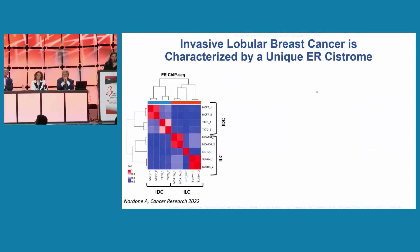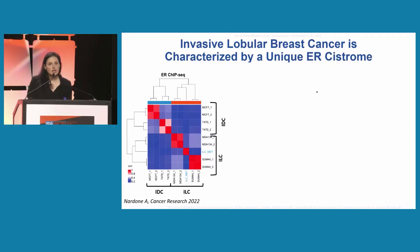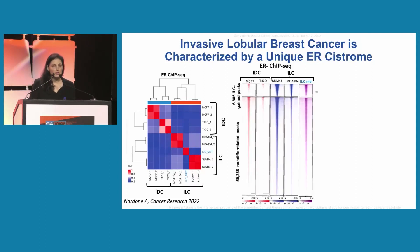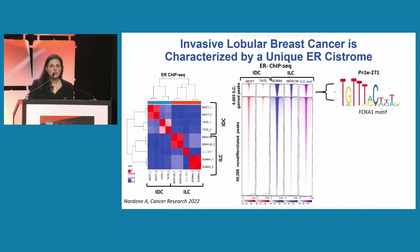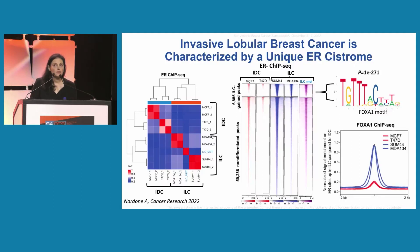We performed ChIP sequencing in a number of models of invasive lobular cancer and invasive ductal cancer. As you can see in the sample-sample correlation plot, the ER cistromes of invasive lobular cancers cluster together and segregate from invasive ductal cancers. This is due to close to 7,000 ER binding sites that are unique to invasive lobular cancers, as shown in this heat map depicting the binding density across all ER binding sites. When we looked into these unique ER binding sites in ILC, we saw that they were enriched in FOXA1 motifs, and when we performed FOXA1 ChIP sequencing, the invasive lobular cancers were indeed enriched in FOXA1 binding at these sites.